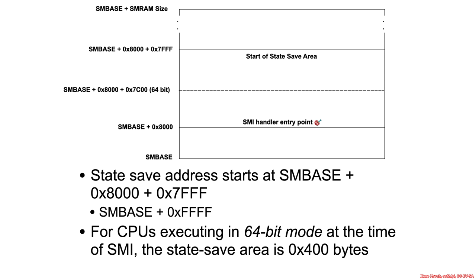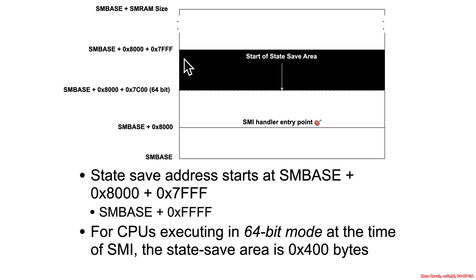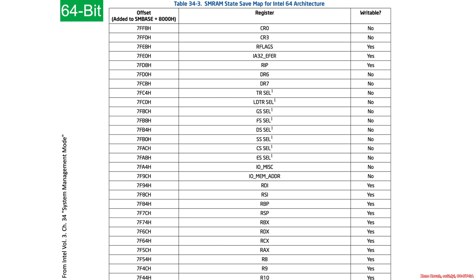If the processor was executing in 64-bit mode at the time the SMI fires, the saved state ranges again from SMBase plus FFFF, and this time it's hex 400 bytes — going down to SMBase plus 8000 plus 7C00. That's what you'd expect: 64-bit mode has larger registers, so double the space.